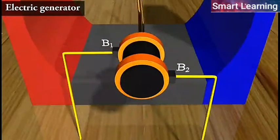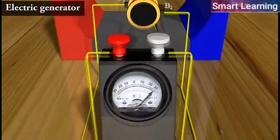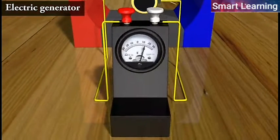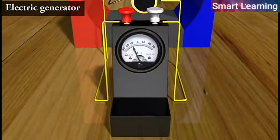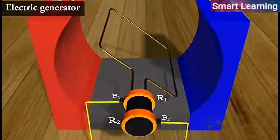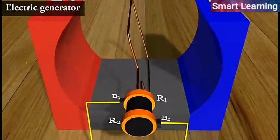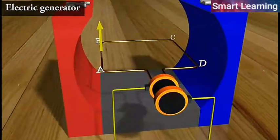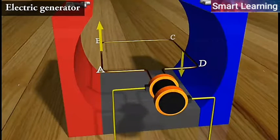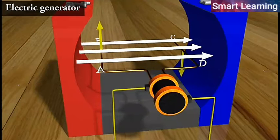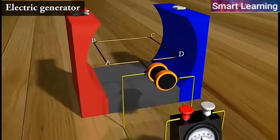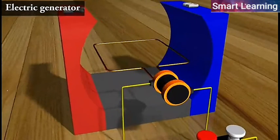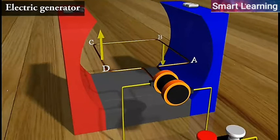Outer ends of the two brushes are connected to the galvanometer to show the flow of current in the given external circuit. When the axle attached to the two rings is rotated such that the arm AB moves up and the arm CD moves down in the magnetic field produced by the permanent magnet. Let us say the coil ABCD is rotated clockwise in the arrangement as shown.